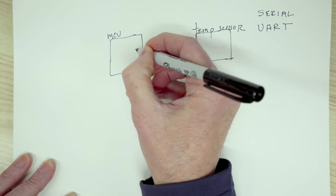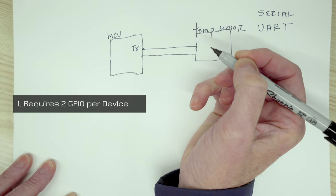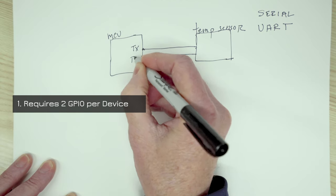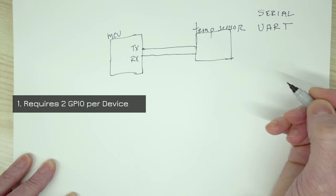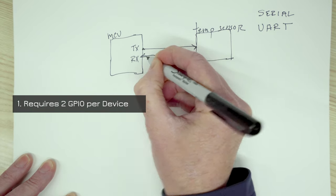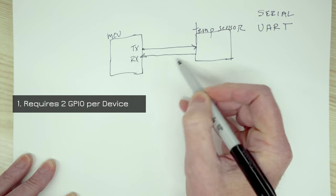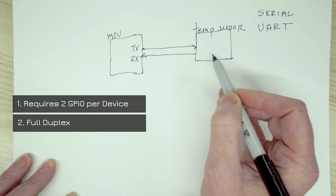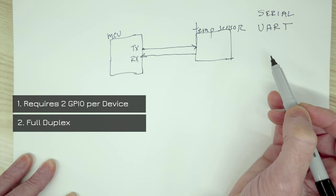So the microcontroller is going to transmit on a TX line and receive on an RX line. That means the data is going this way and this way, which means that we basically have full duplex communication capability. So we can be transmitting and receiving data at the same time.